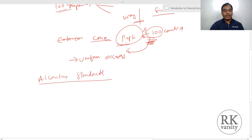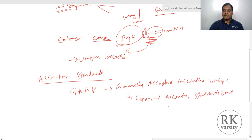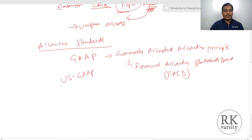When talking about accounting standards, popularly we come across three different forms. One is GAAP — Generally Accepted Accounting Principles. These GAAP principles are provided by FASB, that is the Financial Accounting Standards Board. Normally these are known as US GAAP — all publicly listed companies in the US need to follow the guidelines prescribed in US GAAP.